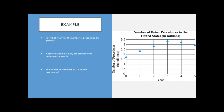The vertical axis represents the number of procedures, and usually the title relates to the vertical. Horizontally we've got time — years — starting at year zero, which is just the first year data was tracked. Year one is one year later, two is two years later, and so on up to year five. Our first question: for which year was the number of procedures the greatest? You're looking for the highest dot on the graph, and year three is the highest, so the answer is year three.